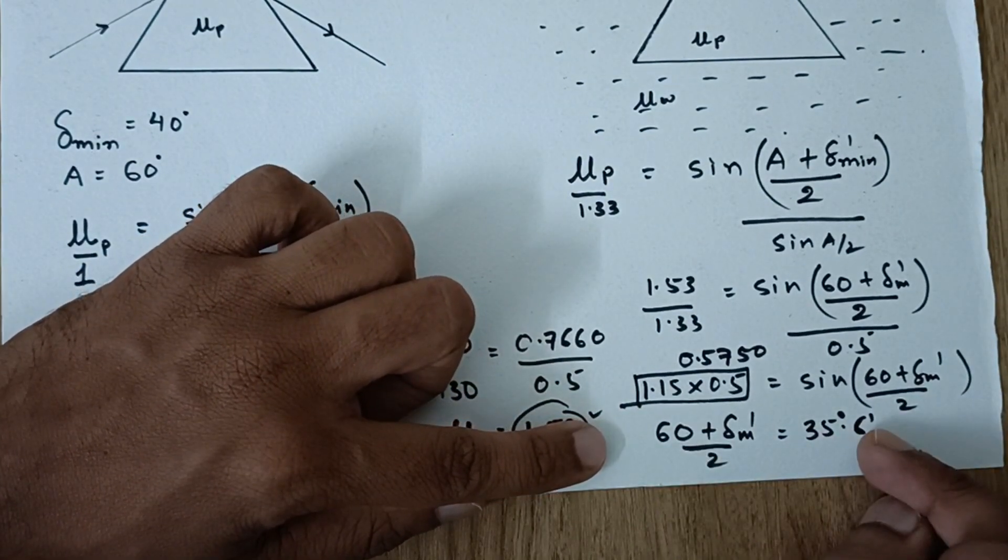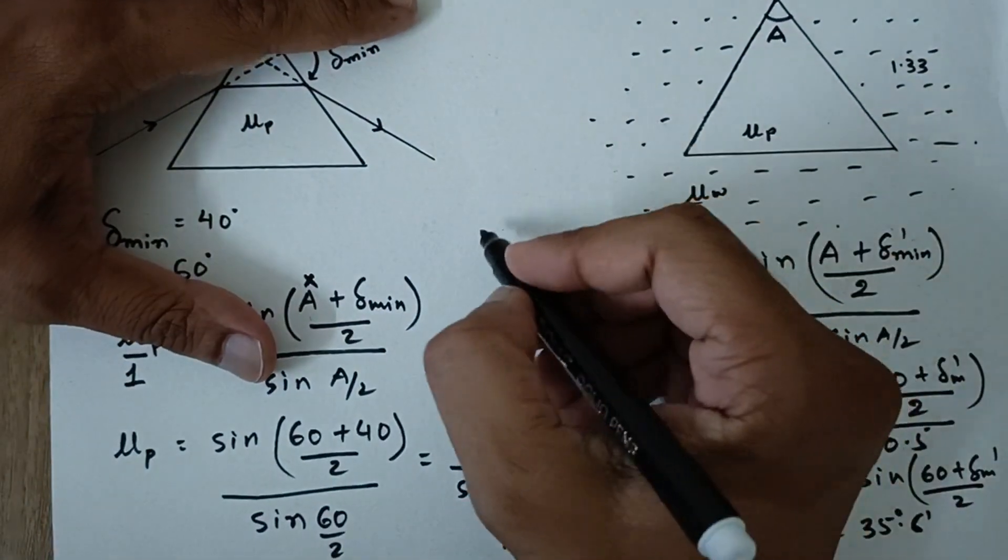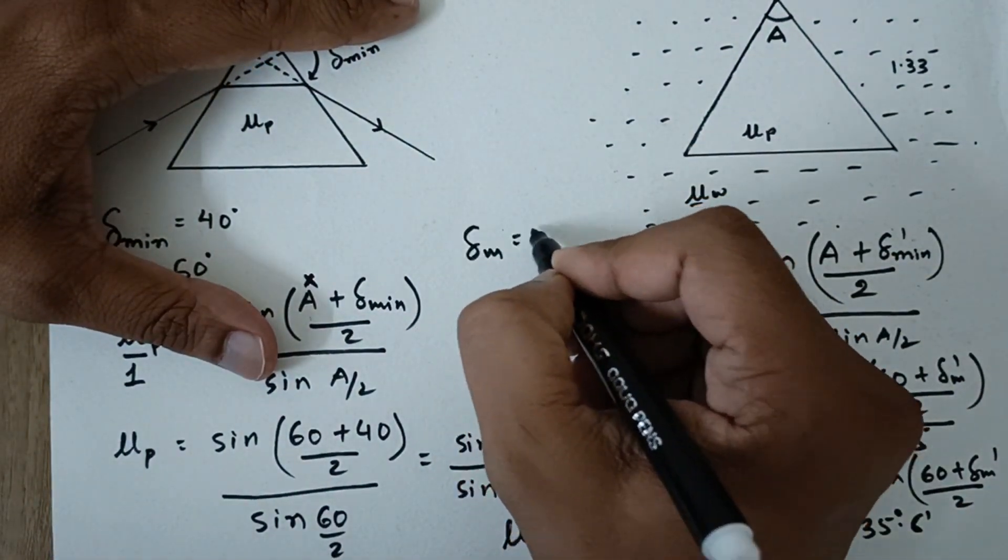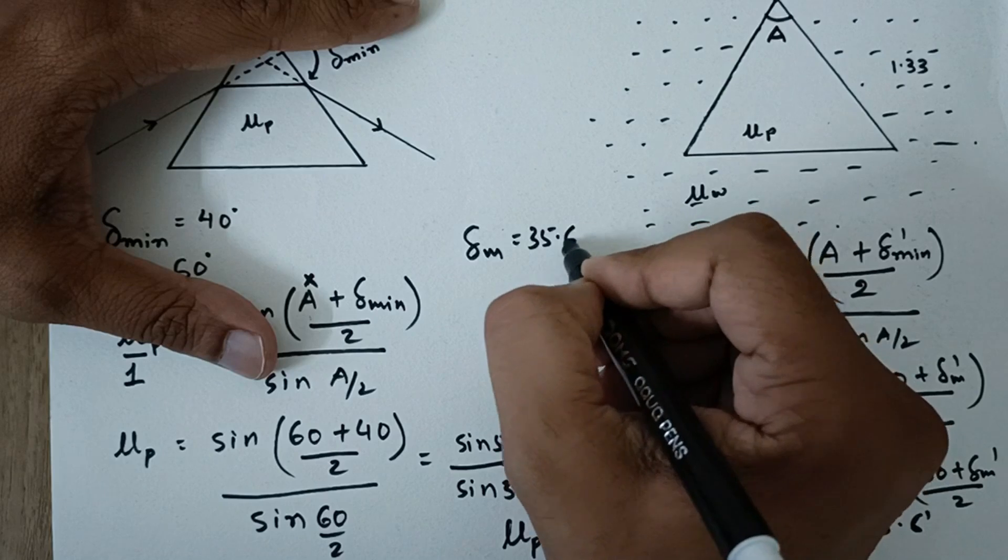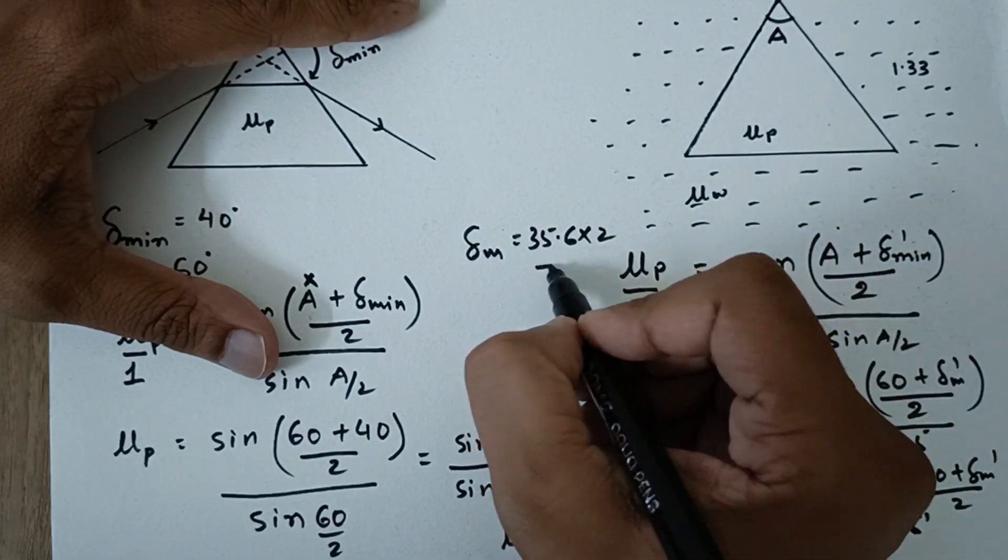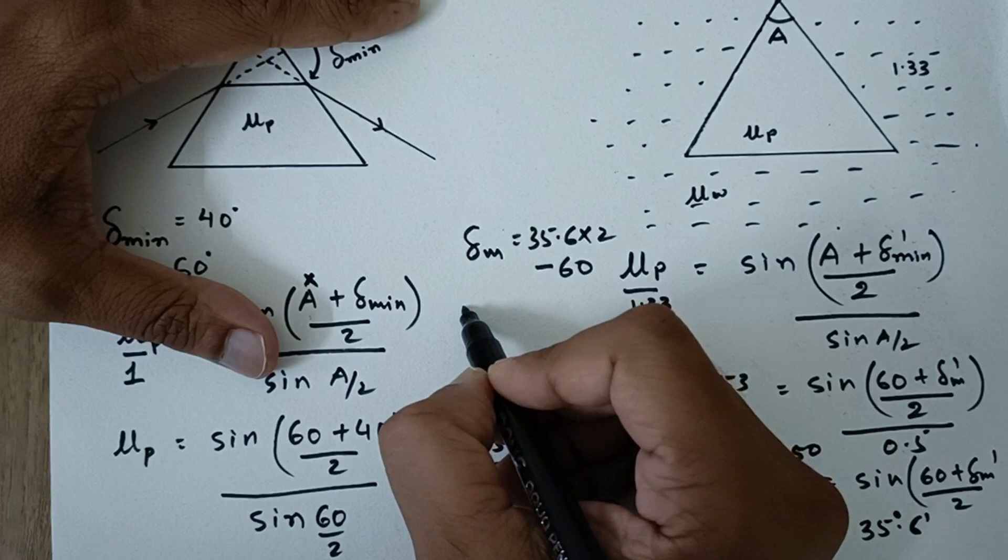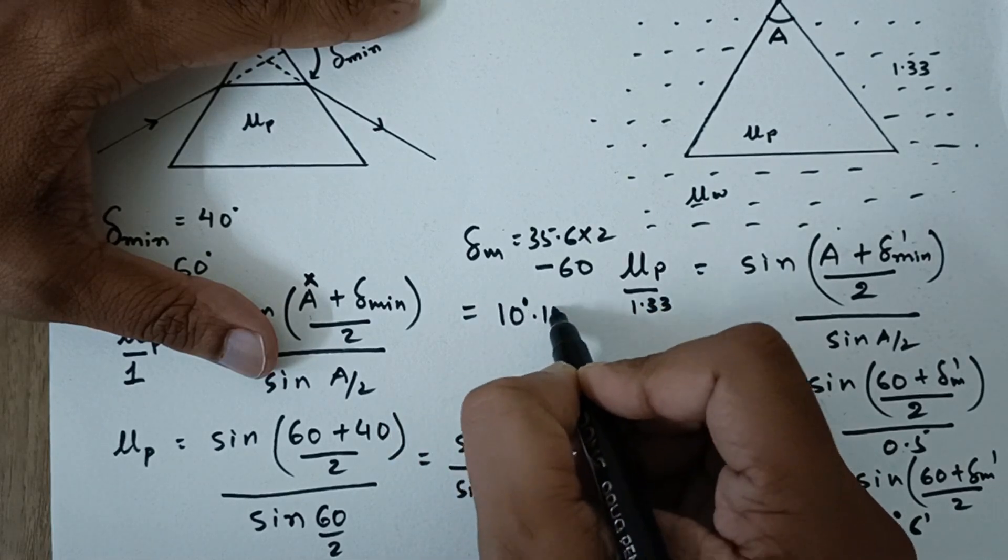Now I cross multiply, bring the 60 on the other side. I will get the delta minimum value, that is 35.6 multiplied by 2, and then I will have to subtract 60. And this angle turns out to be 10 degrees and 12 minutes.